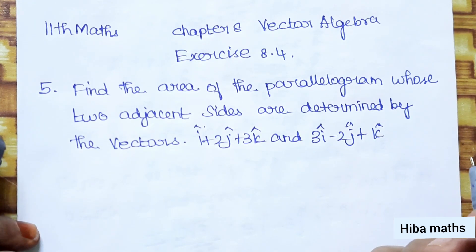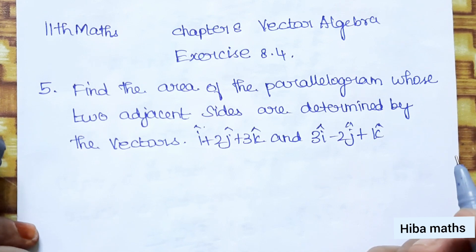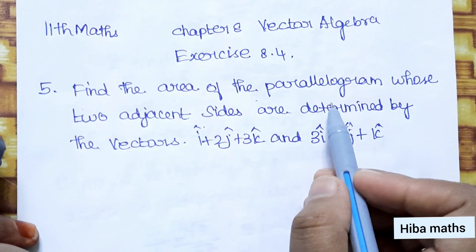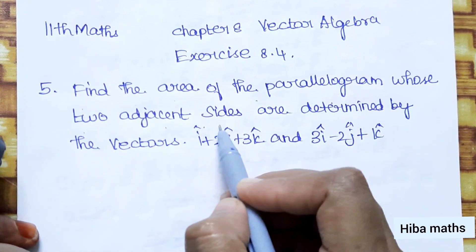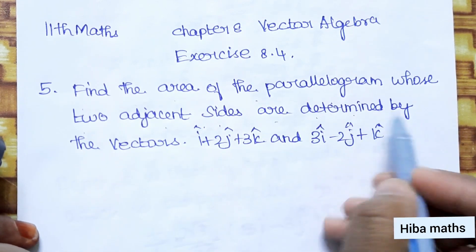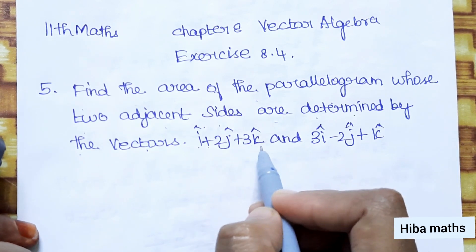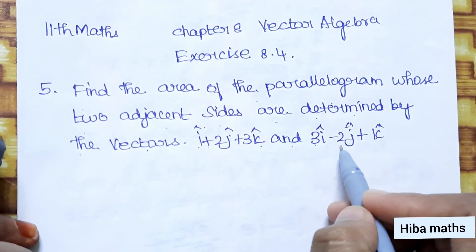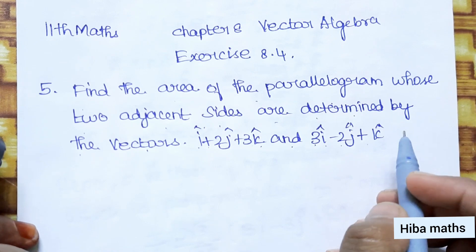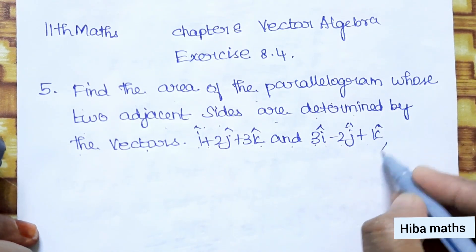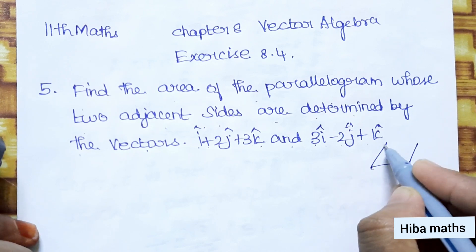Hello students, welcome to Heba Maks 11th standard Maths, Chapter 8 Vector Algebra, Exercise 8.4, 5th question. Find the area of the parallelogram whose two adjacent sides are determined by the vectors i + 2j + 3k and 3i − 2j + k.